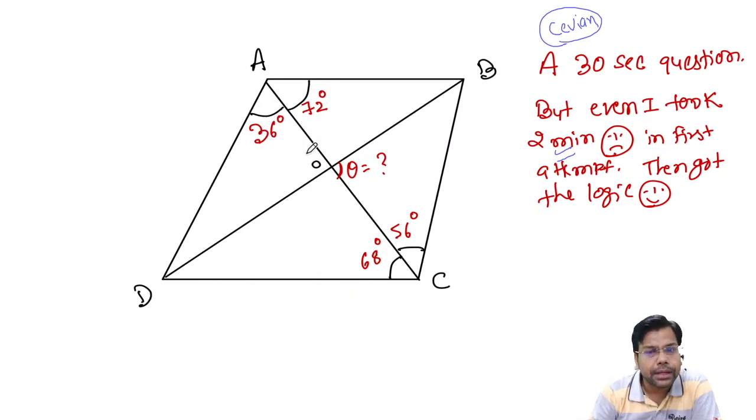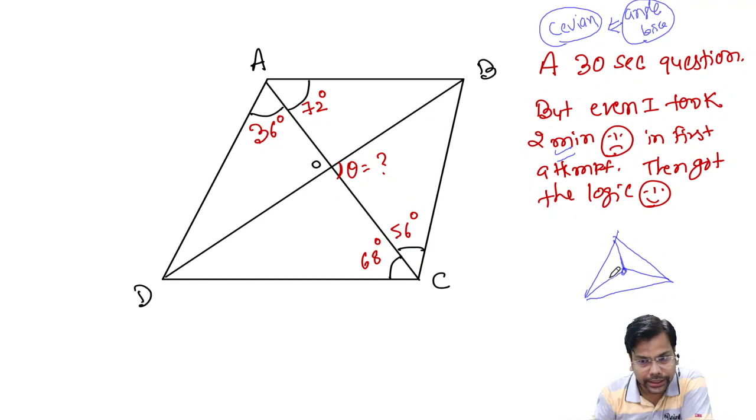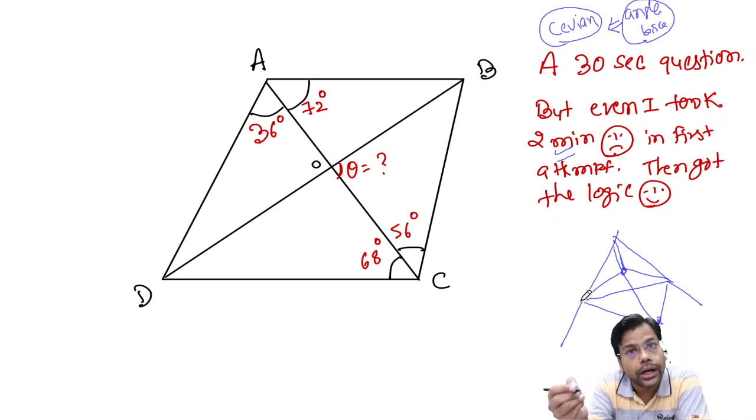This is a simple question, a special question that was created. This question is about CVN, and I want you to apply your mind to such questions. Whenever you have a diagonal angle given, first think it might be a CVN question. CVN has a property that if two angle bisectors cut at a point, then the third angle bisector will also cut at that same point, even if it's an exterior angle bisector.